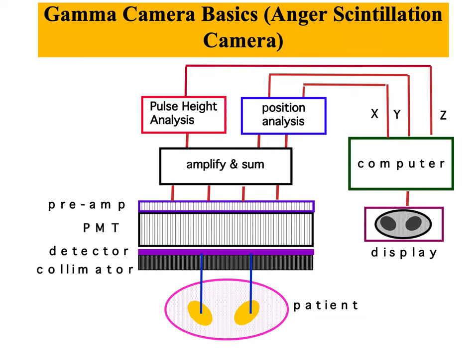You can see the scintillation crystal here in the image — it's this part here. Then we will talk about the collimator. This pink rectangle is the detector, and this is the collimator that we're going to describe shortly. Then we have the photomultiplier tubes in this rectangle, followed by the pre-amplifier, amplifier, pulse height analyzer, position analyzer, and then the computer to process the data and display your nuclear medicine image.